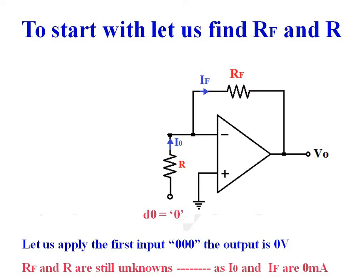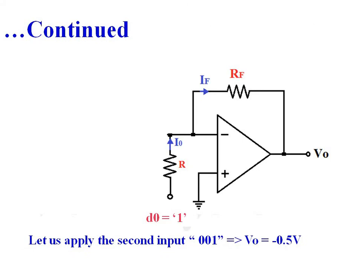We want to find the values of resistance R and RF. Let us reduce this 3-bit digital-to-analog converter to a 1-bit digital-to-analog converter with resolution minus 0.5V so that we can find the values of RF and R. When D0 is equal to 0, output voltage V0 is equal to 0. When D0 is equal to 1, output voltage V0 is equal to minus 0.5V.